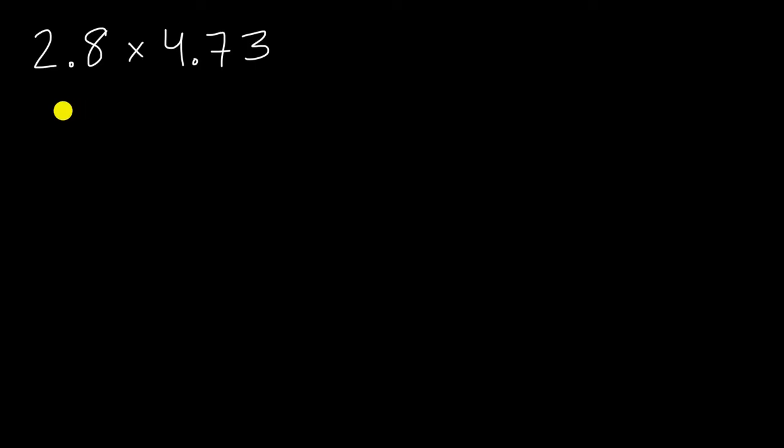So let's just imagine that we were multiplying these numbers without decimals. So that would be a situation where we would have 473 times 28. And so we could try to compute that.